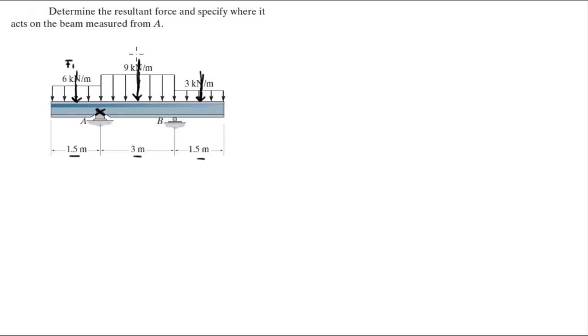So let's call this F1, F2, F3. F1 is equal to the 6 kN per meter times 1.5. F2 is equal to 9 kN per meter times 3. And F3 is equal to 3 kN per meter times 1.5 again.